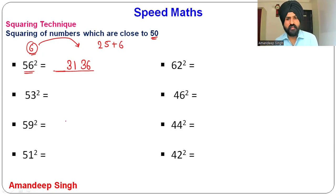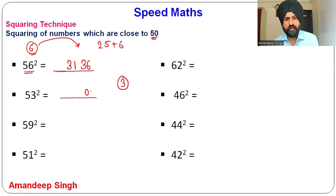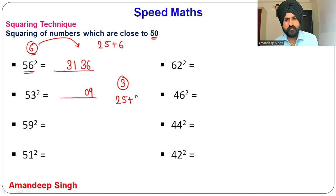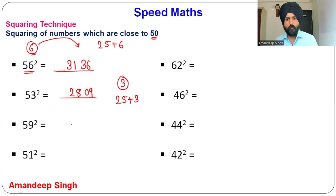For 53²: how much is this number more than 50? It is 3. What is 3²? It is 9, so write 09 (always two digits). Add the extra part to 25: 25 + 3 = 28. So 53² = 2809. This method works when numbers are close to 50.